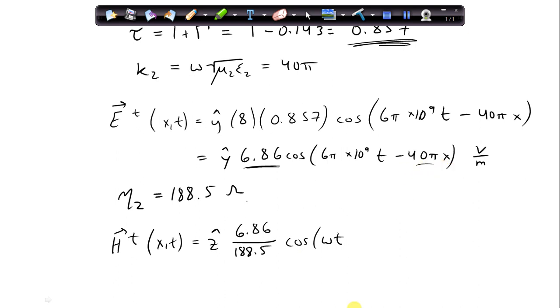The argument is the same, it's propagating in the same direction, minus 40 pi x. So we can simplify that: z-hat 36.38 cosine 6 pi times 10 to the 9th t minus 40 pi x, and that is in milliamps per meter.